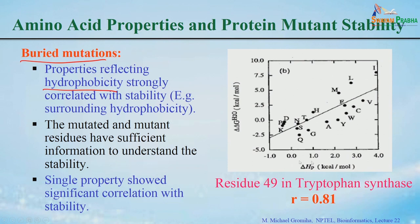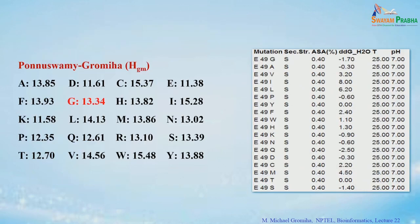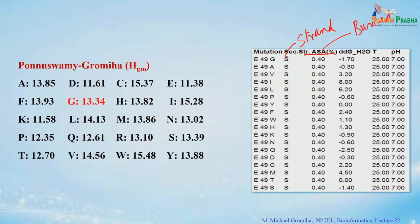I will show another example: glutamic acid at position 49, mutated to different residues. The secondary structure at this position is a beta strand, and with an ASA of 0.4 (less than 1%), it is buried. To see which properties reflect better correlation with delta delta G H2O (the experimental data), we can use the hydrophobicity values. The x-axis is delta Hgm (hydrophobicity scale) and the y-axis is delta delta G H2O.